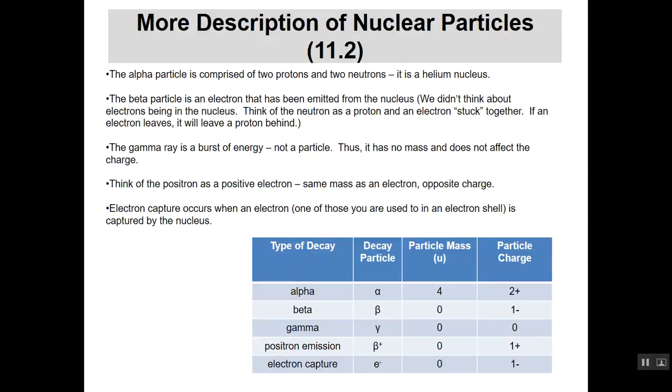A little bit more description of these just so we can get a better idea maybe of what we look like in the alpha particle. It's composed, as I said earlier, comprised of two protons, two neutrons. It really is a helium nucleus. As you look at the chart down below, you'll see that it really just has to make up the composition of a helium nucleus.